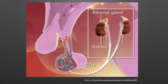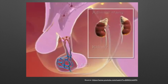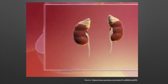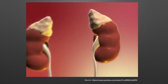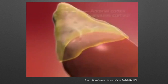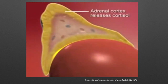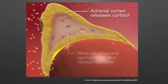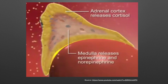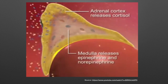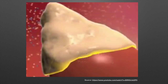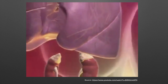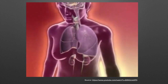This in turn alerts the adrenal glands, which are located on top of each kidney. The ACTH from the pituitary gland stimulates the adrenal cortex to release cortisol. At the same time, neurons in the hypothalamus signal the medulla to release epinephrine (adrenaline) and norepinephrine (noradrenaline). These hormones then push the body into hyperalertness.